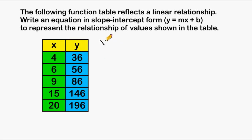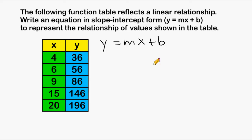The first thing we are going to do is write our equation y equals mx plus b, and really what we are looking for is what our m value is, which is going to be the slope of our line, and what the b value is, which is where our line is going to intersect the y-axis.